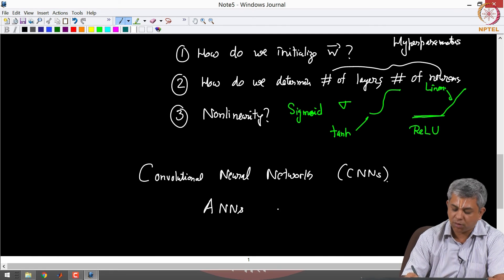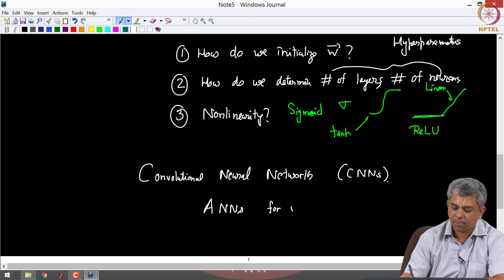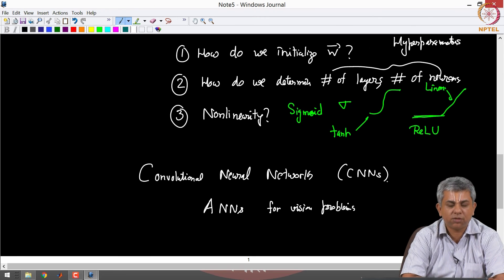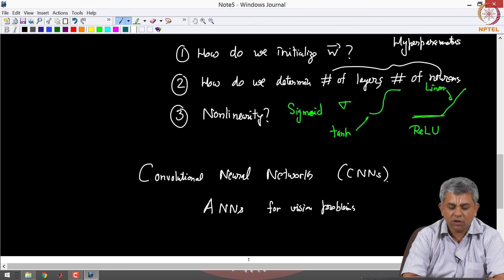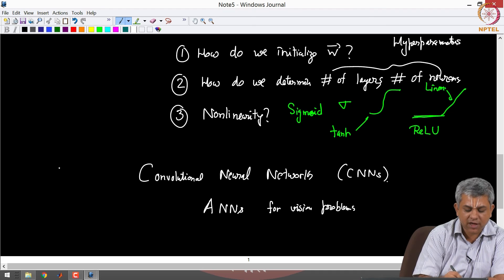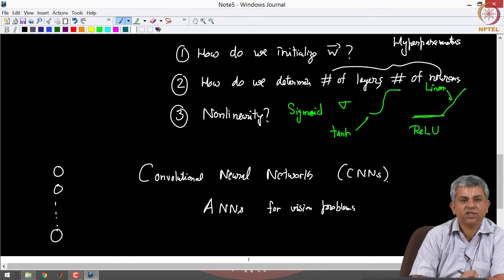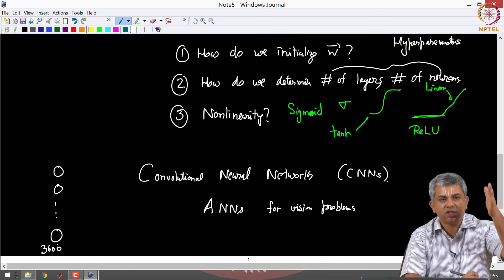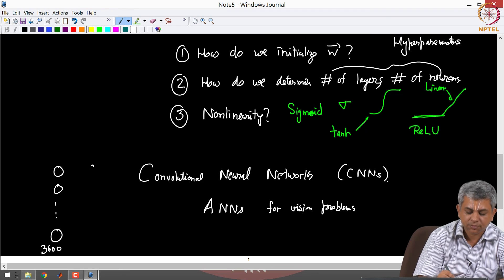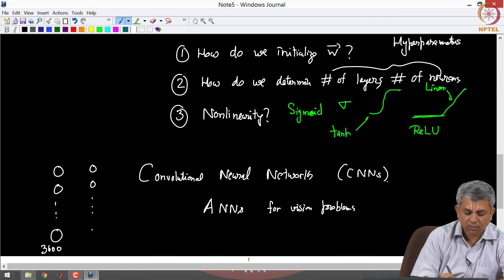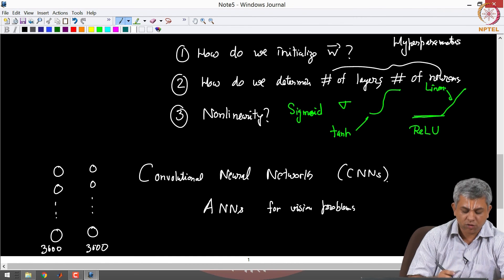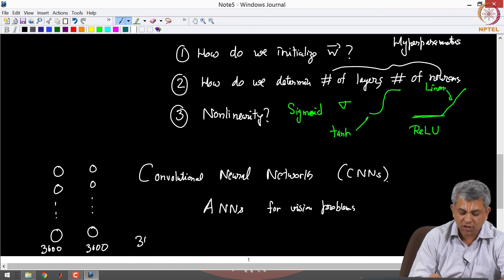Is there any problem with ANNs that we cannot use it for vision problems? Not really, the only issue is that let's take my favorite example that of a 60 cross 60 image. Let's say you have 3600 features, this is just linear features, and suppose you have 3600 in the next layer also, so you can see that this is 3600 square weights already which is a huge number of weights.